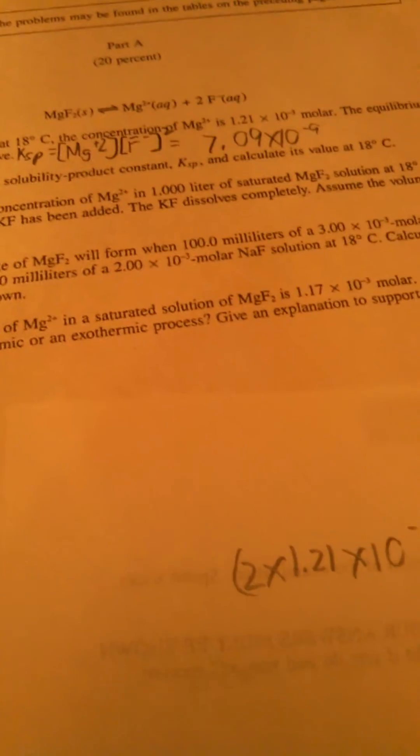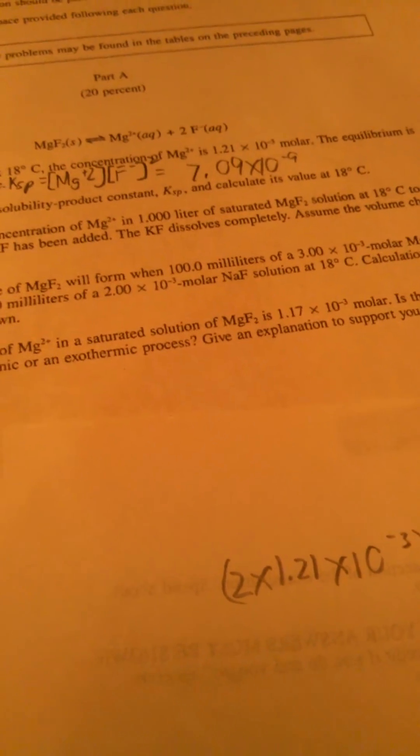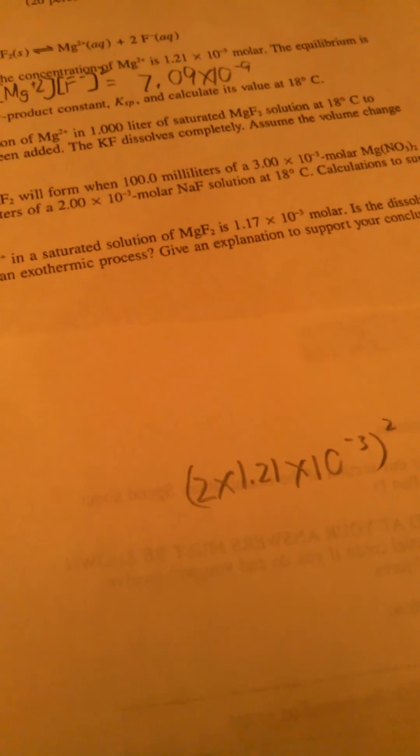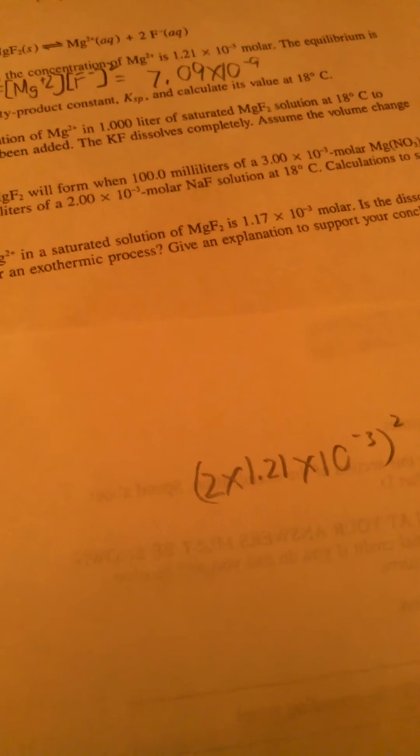Then it asks to calculate the equilibrium concentration of magnesium ion in 1 liter of saturated magnesium fluoride solution at 18 degrees Celsius, to which 0.1 moles of solid KF has been added. The KF dissolves completely. Assume the volume change is negligible.